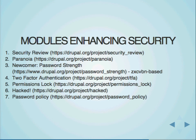Permissions Lock module: one mistake with a checkbox can ruin your day on that permissions screen. Permissions Lock basically pushes you to manage your permissions via code rather than via the interface. Hacked module can help make sure you haven't been hacked — it's not so good at preventing it but can help with cleanup and identifying that there has been a problem. And then Password Policy: if you work in a regulatory environment that requires a specific policy, you can use Password Policy and Password Strength together. It also enforces a history constraint so you can't reuse the same password over a certain amount of time.